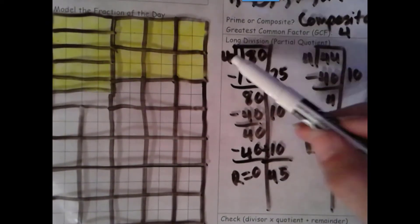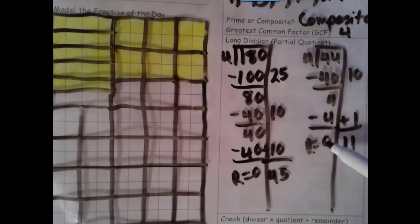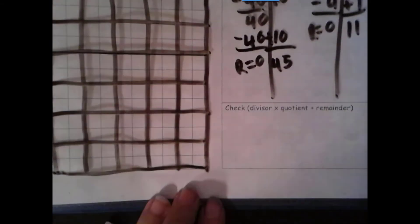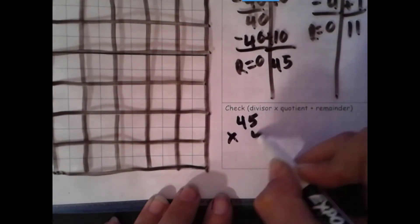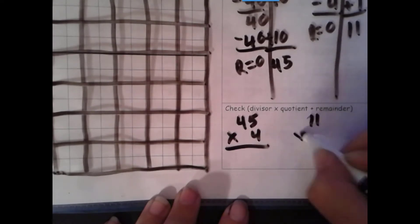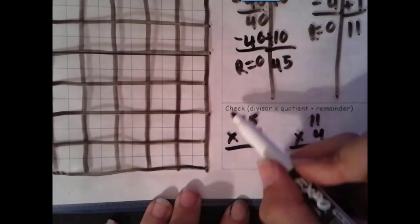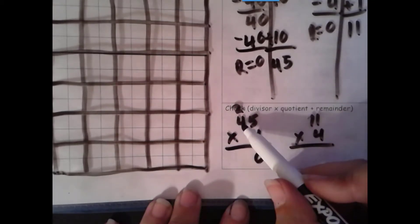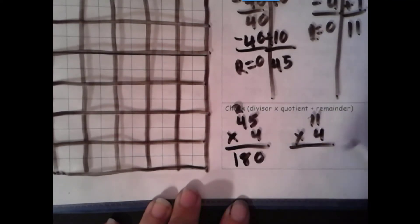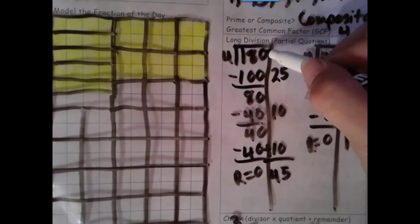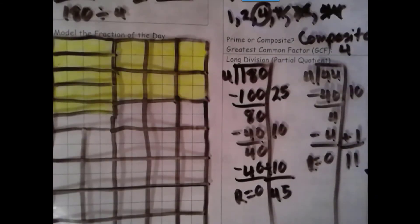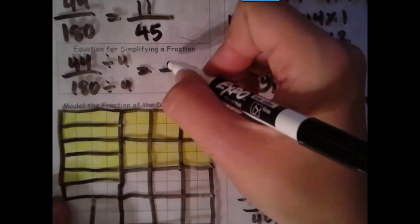Let's check. Divisor times quotient plus remainder. Since our remainder is 0 for both of them, we don't need to add it because the identity property of addition says when you add 0, it stays the same. 4 times 5 is 20. 4 groups of 4 tens is 16 tens plus 2 more tens is 18 tens. 4 times 1, 4 groups of 1 is 4. 4 groups of 10 is 40. 44, that checks here with our dividend. 180 checks here with our dividend. So our numerator is definitely 11, our denominator is definitely 45.